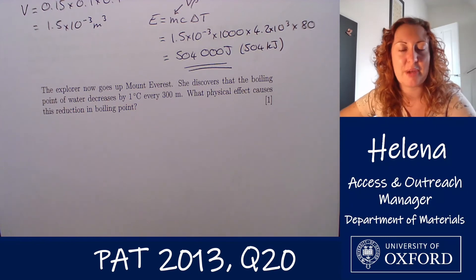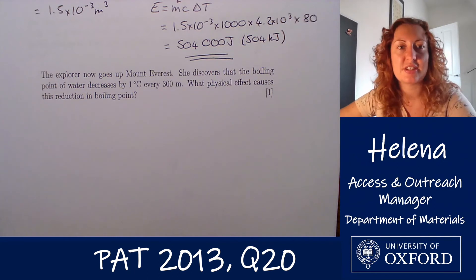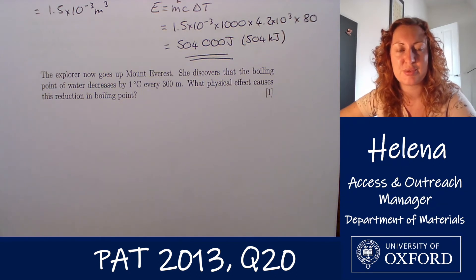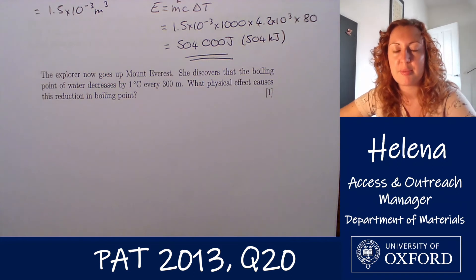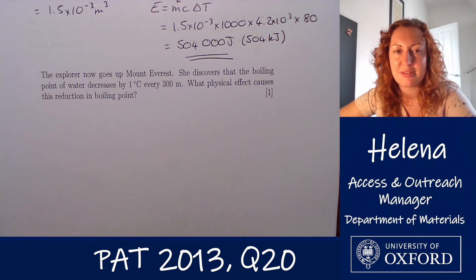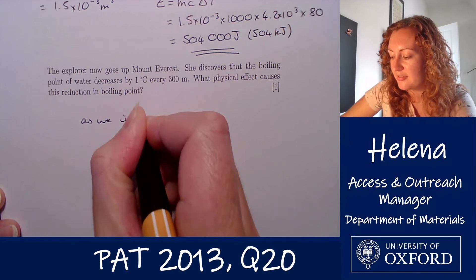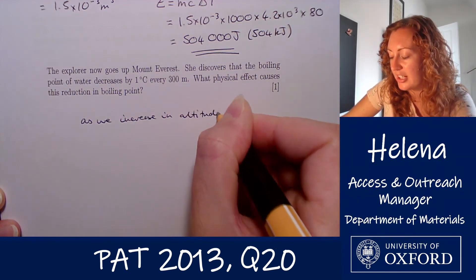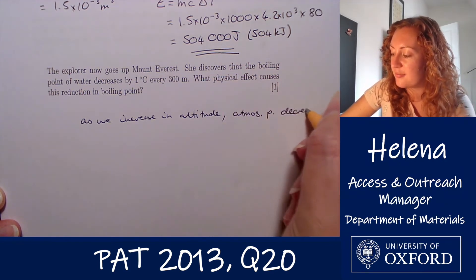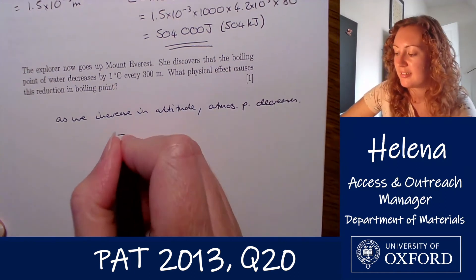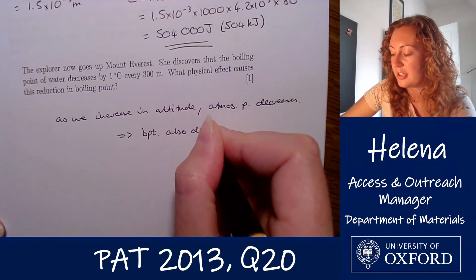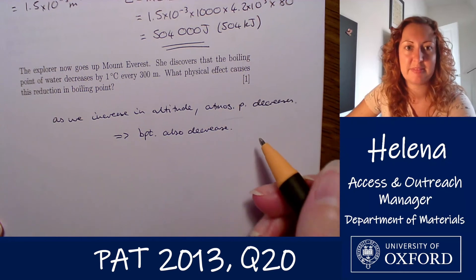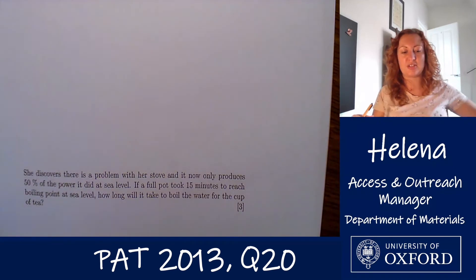Our explorer is now going up Mount Everest, and she discovers that the boiling point of water decreases by one degree for every 300 metres that she climbs. The question asks: what physical effect causes this reduction in boiling point? Boiling point is defined as the temperature at which the vapour pressure of the liquid equals the atmospheric pressure. As we increase in altitude and she climbs the mountain, the atmospheric pressure decreases — and therefore the boiling point will also decrease. It is this reduction in atmospheric pressure that causes the boiling point to decrease.